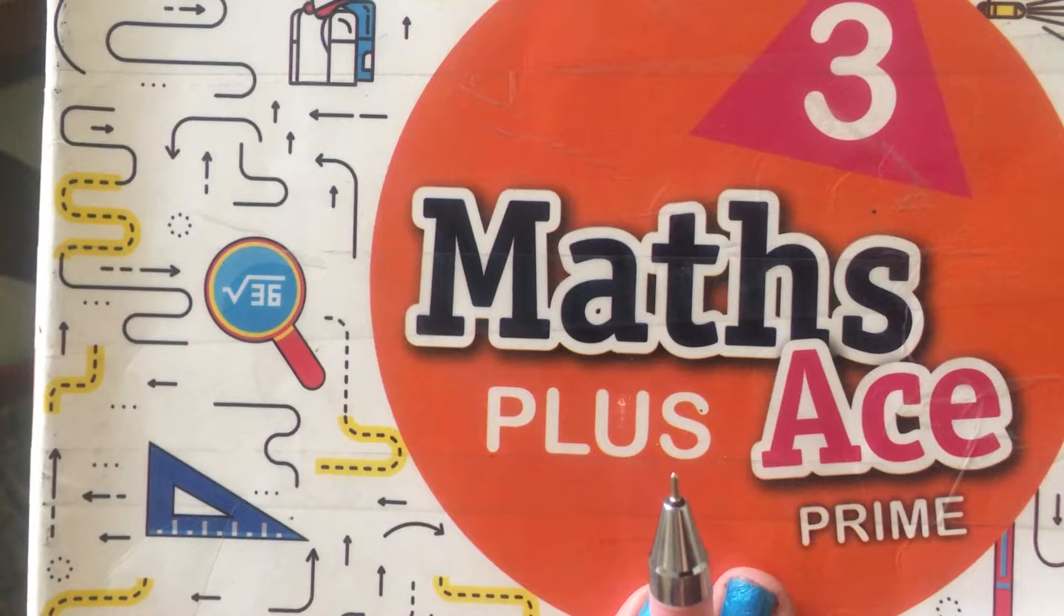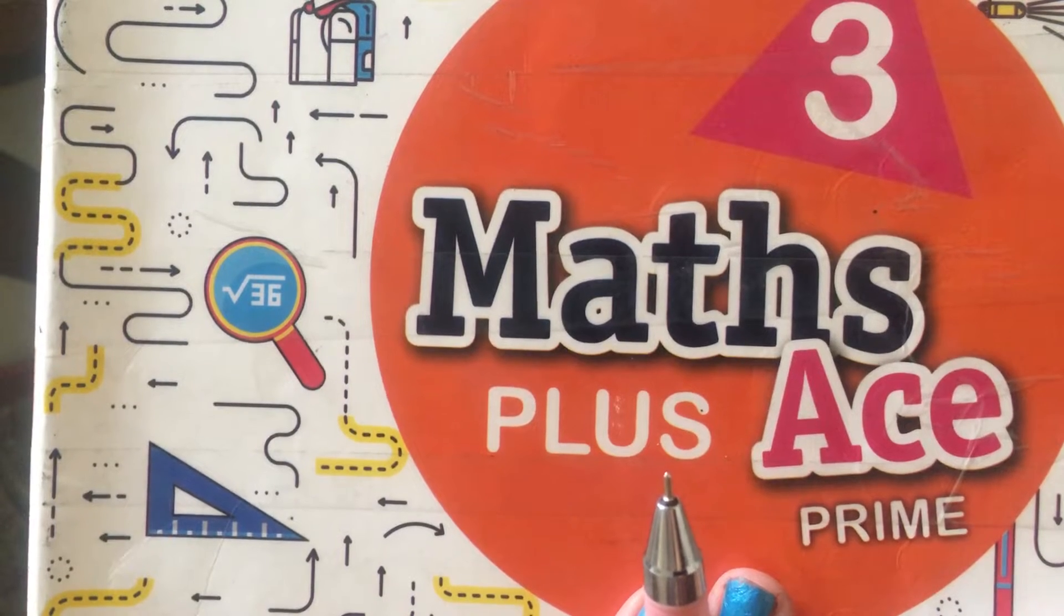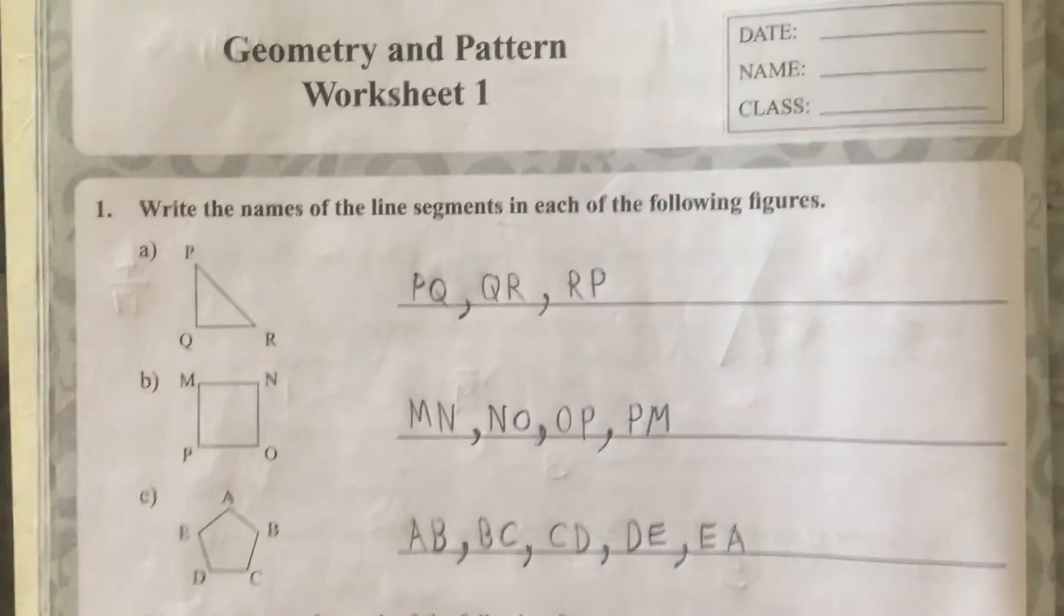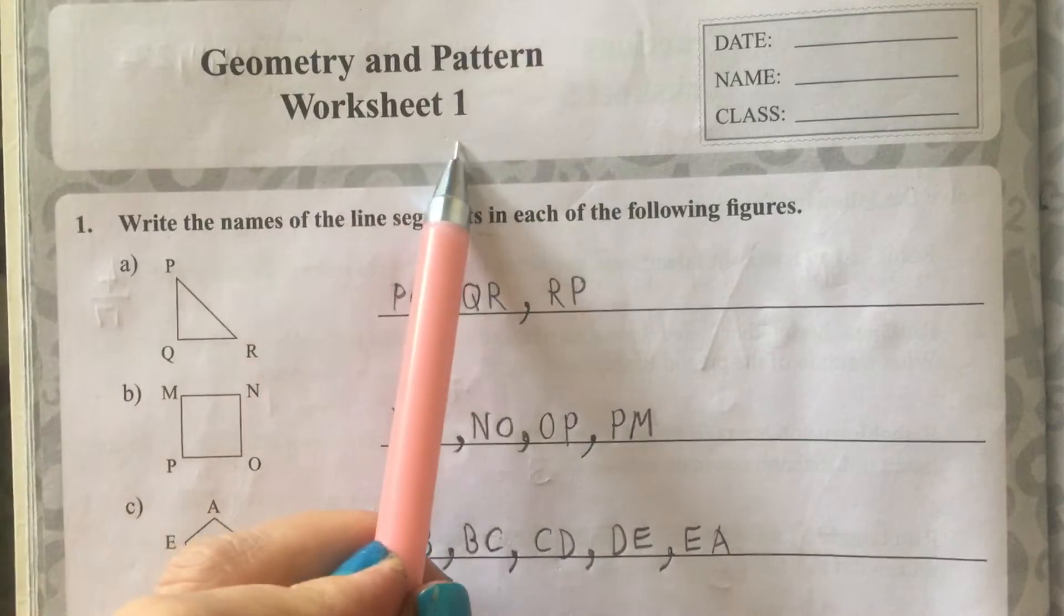Hello, Lily here. Today we are starting with Class 3, Chapter 7 of your Maths workbook. The name of the chapter is Geometry and Pattern, Worksheet 1.